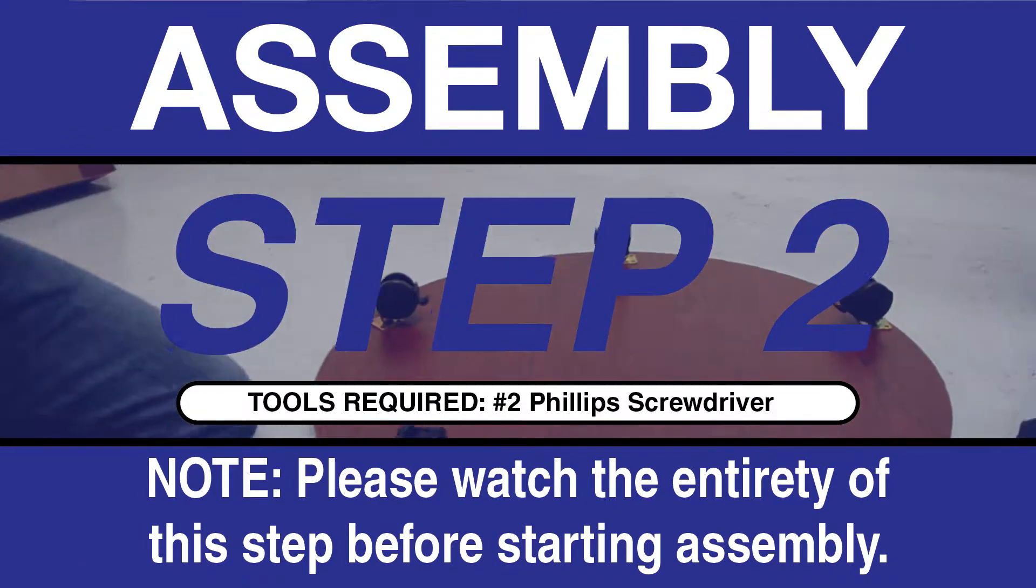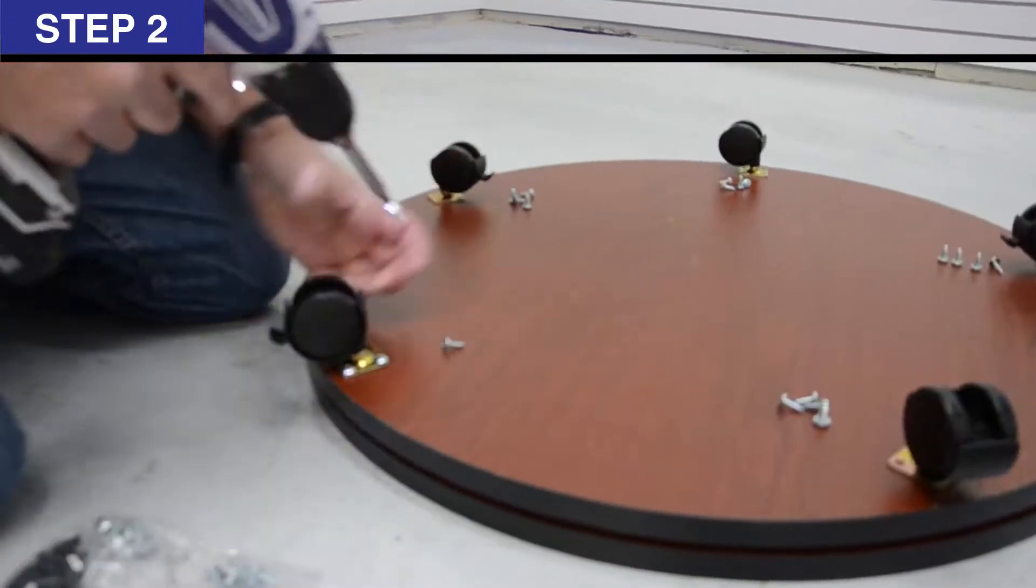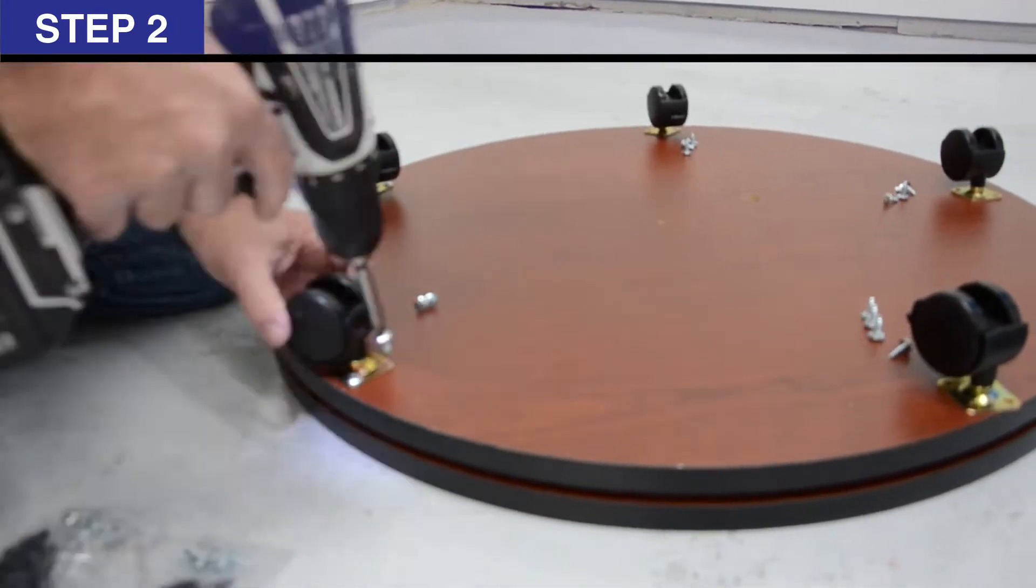Step 2: Attach 3 locking casters C and 2 non-locking casters D to bottom of base Q using 25, 5/8 inch truss head screws A.